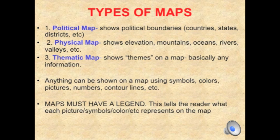What are the types of maps? There are three types of maps: political map, physical map, thematic map. A political map shows you countries, states, districts, etc. The physical map, like the one we have in the back, shows elevations, mountains, oceans, rivers, things like that.